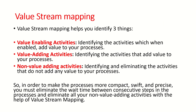Moving on to value stream mapping. Value stream mapping helps you identify three things: first, value-enabling activities — activities which, when enabled, help add value to the process; second, value-adding activities — activities that add value to your process directly; and third, non-value-added activities — activities that do not add any value to the process. To make the process more compact, swift, and precise, you must eliminate the wait time between consecutive steps and eliminate all non-value-added activities.